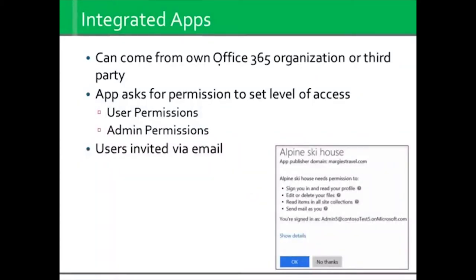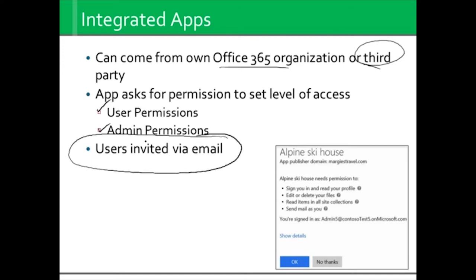Integrated apps can come from your own organization or even third party. There's an icon for the Microsoft Store — you can go out and buy an app that makes your life easier. But when you install those apps, there are always going to be some permissions. We have to have set levels of access. What are the users going to be able to do, and who's going to be the administrator of that app? So when you have integrated apps, you want to make sure you've got a plan going into it. If someone is invited to use that app, it'll send that invitation in email.